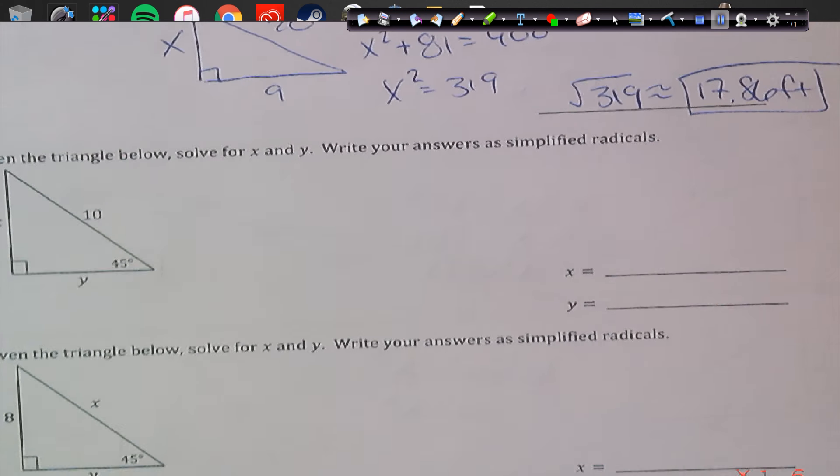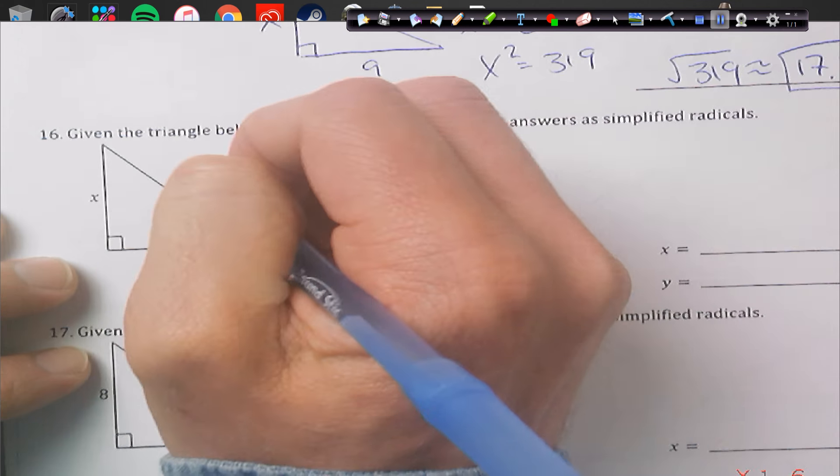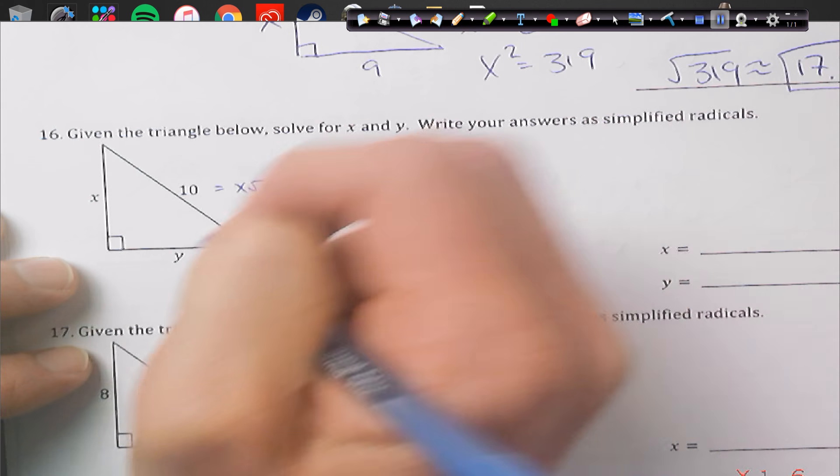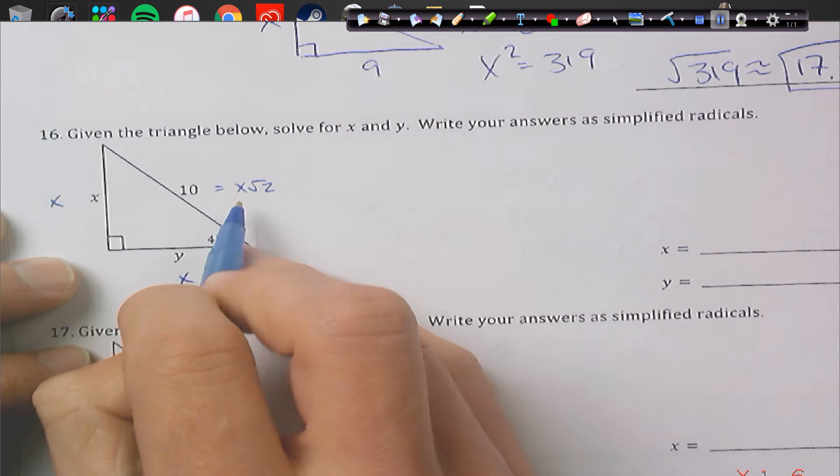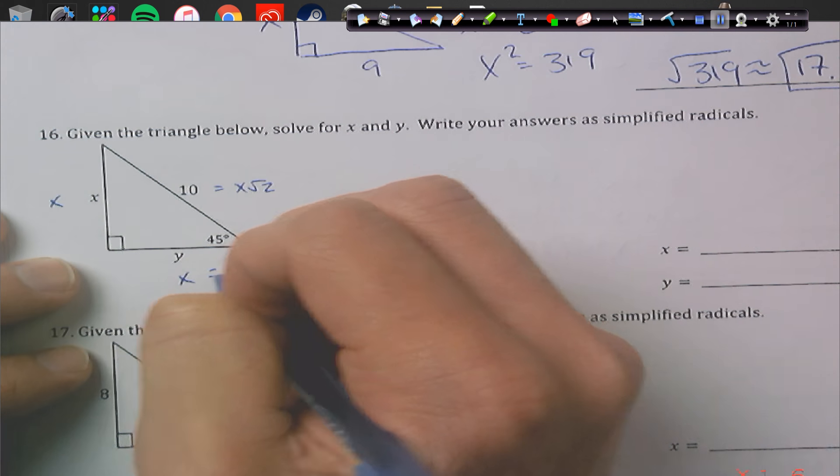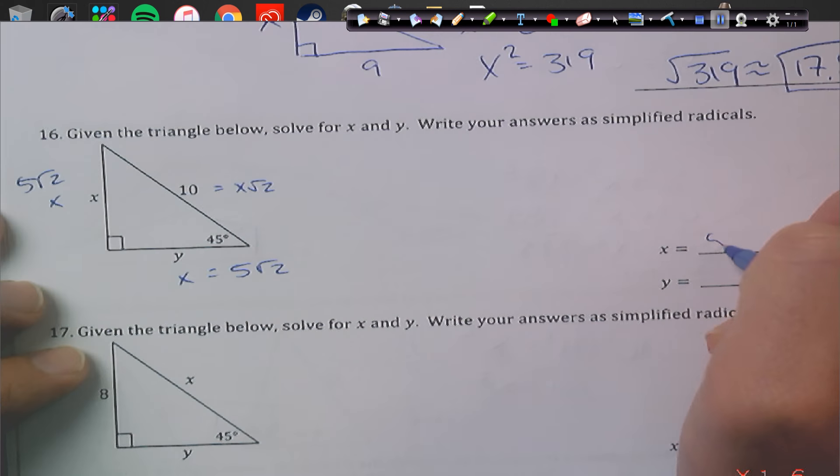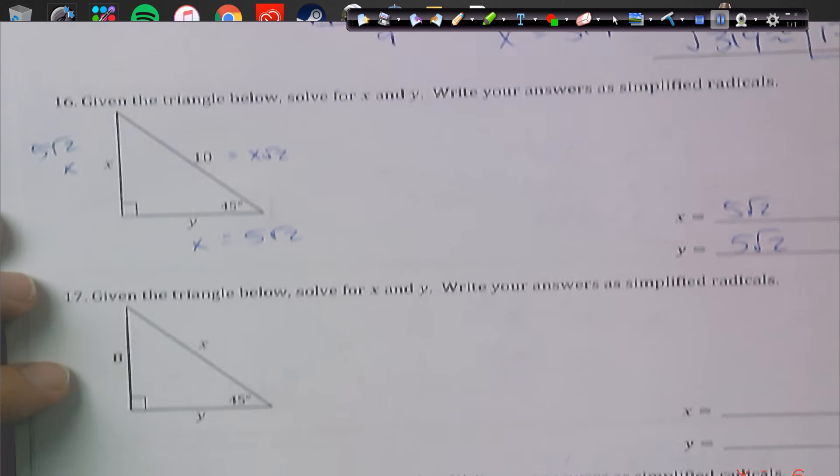Given the triangle, we'll solve for x. Write your answer in simplified radical form. This is a 45-45-90 triangle. So, this is an x rad 2 position. x and x. So, divide by 2. Multiply by rad 2. So, I'm going to get 5 rad 2 and 5 rad 2. That's our shortcut, if you guys recall. So, this problem is super fast.